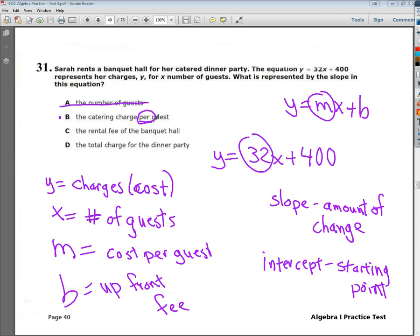C is the rental fee of the banquet hall. That's your up front fee. Nobody shows up. Sad all around. And the total charge for the dinner party. We just said that the total cost is already matched at Y. So, our answer to number 31 is B.